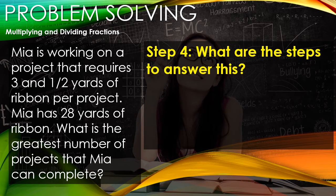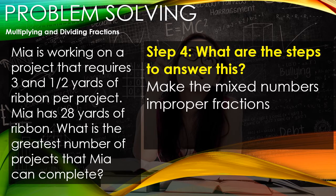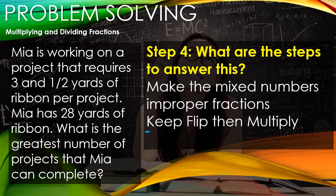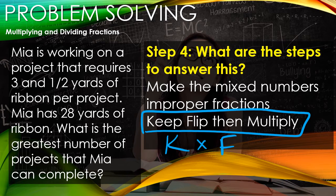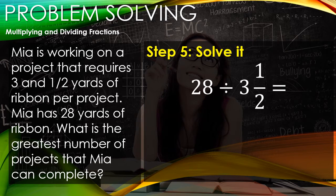Our steps are: making all mixed numbers into improper fractions, and for division we're going to keep the first fraction, flip the second fraction, and then multiply them together. Now step 5: all we have left to do is solve this.